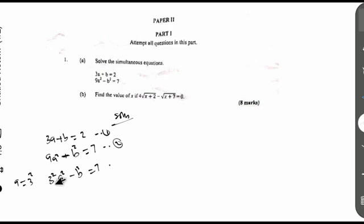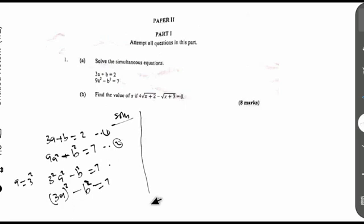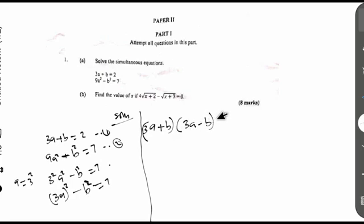Looking at this expression now, 3 squared and A squared are multiplied together and both carry the square power, so we can express them together as 3A raised to the power of 2, minus B squared, equals 7. Now we have a difference of two squares. Remembering factorization, this can be expressed as 3A plus B, multiplied by 3A minus B, equals 7.